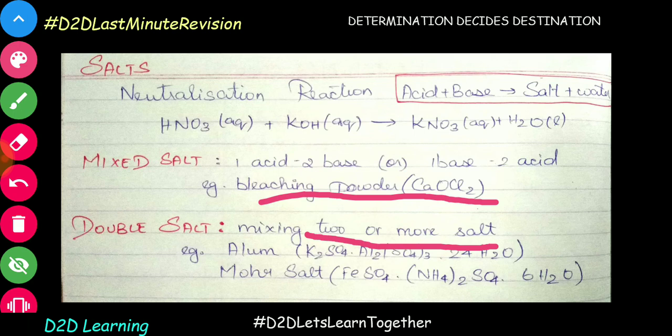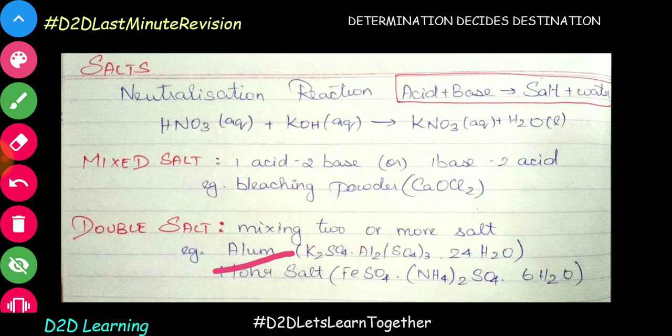Let's get examples — alum and more salts. This is very common. Alum is K2SO4 · Al2(SO4)3 · 24H2O. So if you want to tell this formula out of the following options, you can identify it. K2SO4 · Al2(SO4)3 · 24H2O — that means it is a double salt.